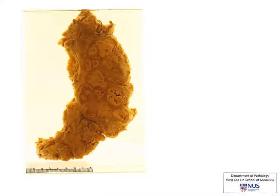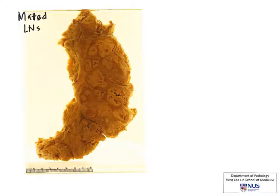In this picture, we're looking at a whole bunch of lymph nodes that have been stuck to each other. When lymph nodes stick to each other clinically, they are known as matted. So we would be able to palpate them if they were in a superficial site, and they would feel like a firm mass of nodes.